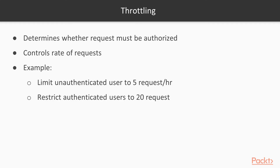Throttling also determines whether the request must be authorized. Throttles control the rate of requests that users can make to our API. For example, we want to limit unauthenticated users to a maximum of 5 requests per hour, and we want to restrict authenticated users to a maximum of 20 requests to the Games-related views per day.